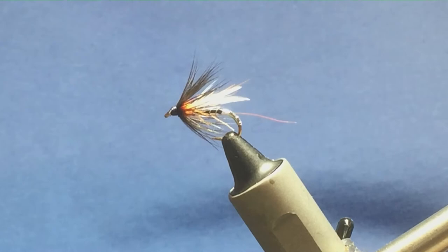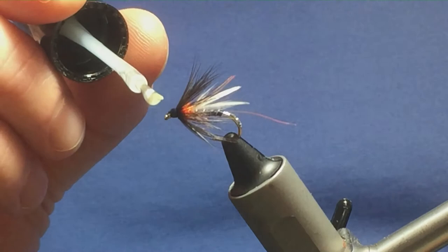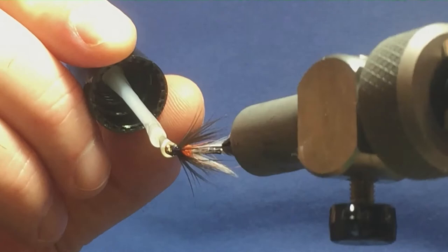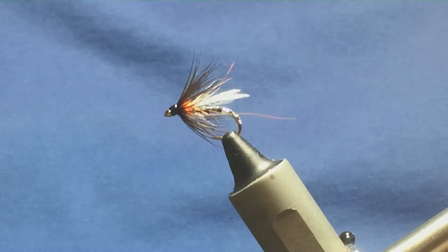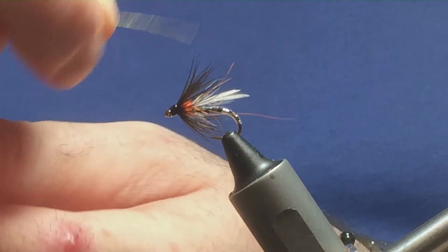Now just to finish off, just a wee coat of clear varnish just on the head. Don't worry if you get some in the eye. Clear that out in a wee second. Put a wee square here. Just use this bit on the spool. Just come in and clean out your eye.